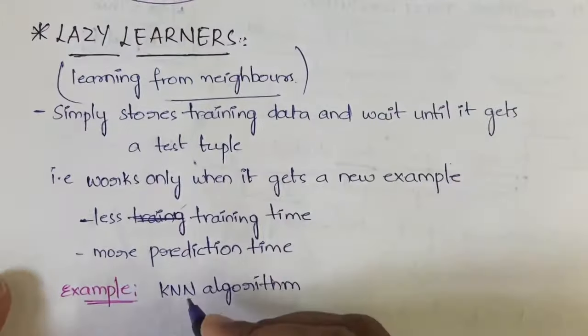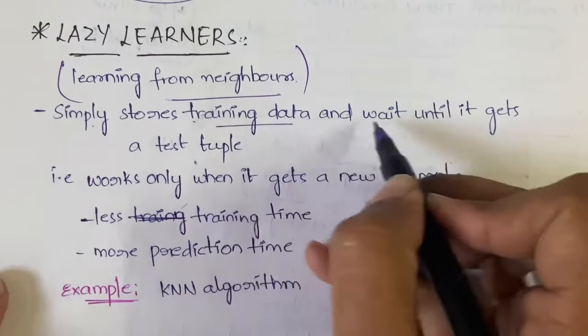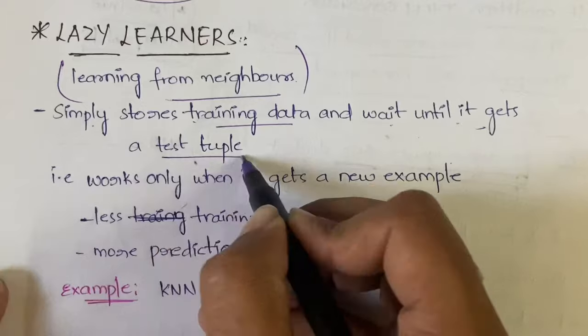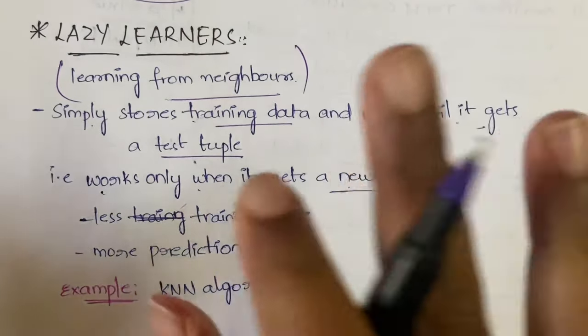Here, what it will do is simply store the training data and wait until it gets a test tuple. It will work only when it gets a new example. What does this mean?